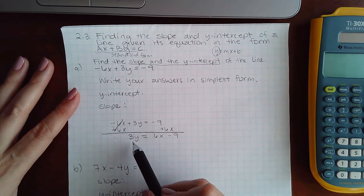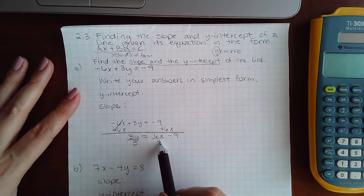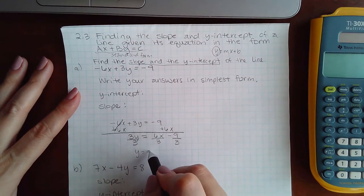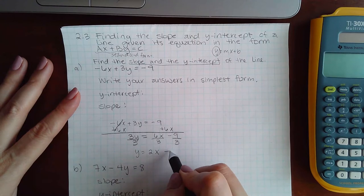Then to continue to solve for y, I'm going to divide every single term by 3. This reduces to 2 and this reduces to 3.